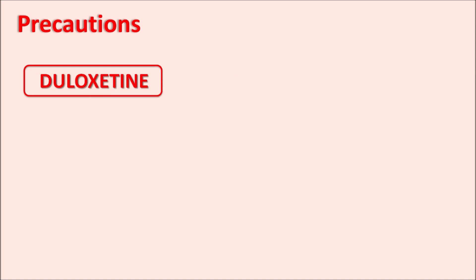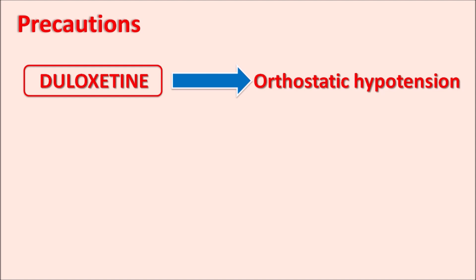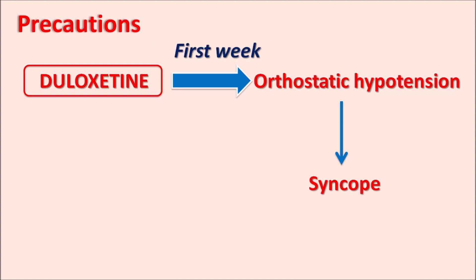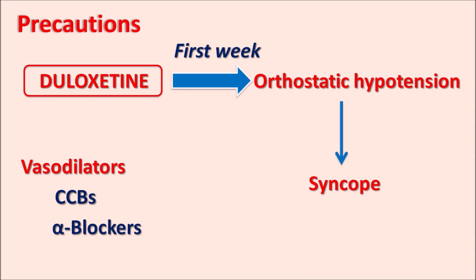Another important precaution is that Duloxetine can produce orthostatic hypotension, which may lead to syncope in patients. This condition can be observed within the first week of treatment, so caution should be taken. When the patient is also being treated with vasodilators such as calcium channel blockers or alpha blockers, they can further increase the orthostatic hypotension.